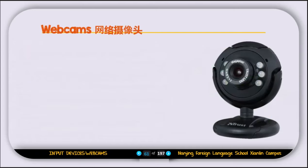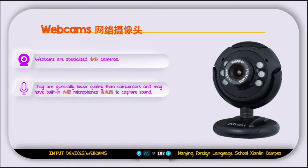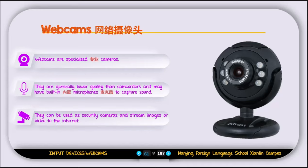The next input device is the webcam. Webcams are specialized cameras, generally lower quality than camcorders, and they have a built-in microphone to capture sound. They can be used as security cameras and to stream images or videos to the internet. We call them webcams because they are mainly used to stream video — for example, for video calls. Some laptops have built-in cameras; others require an external camera connected via USB. Webcams are used in online classes, online meetings, video calls, and video streaming.